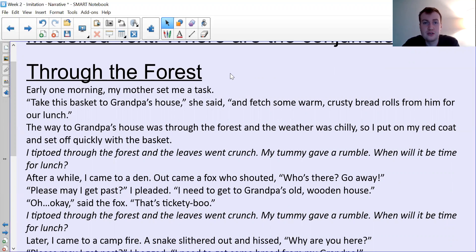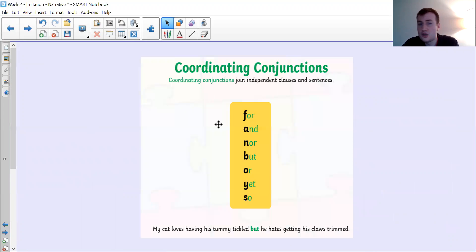So coordinating conjunctions is you remember joining two different sentences together. We've talked about FANBOYS before, all the main coordinating conjunctions. We mainly look at and, but, or, so, and sometimes yet. So they give an example at the bottom: my cat loves having his tummy tickled but he hates getting his claws trimmed. So they're two separate sentences. It would be okay if it was my cat loves having his tummy tickled. Full stop. He hates getting his claws trimmed. Full stop. That would be fine. They're two separate sentences that have been joined.